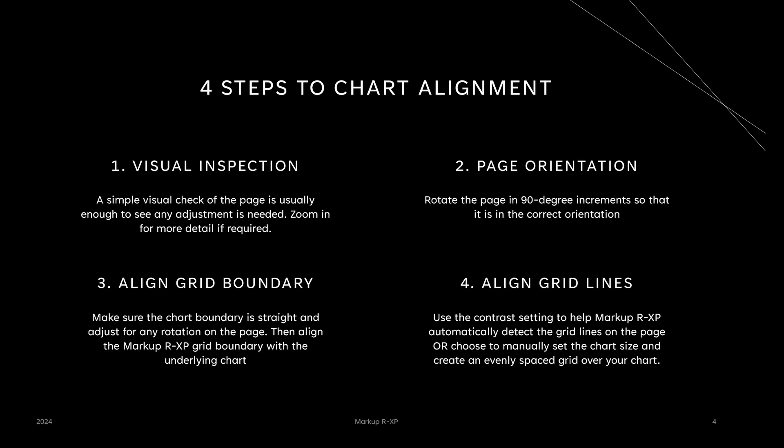These are the four steps I usually follow to align my charts on a single page in Markup RXP. Step number one is a visual inspection, and this is really just to identify any obvious errors with the chart - are the grid lines straight or are they bendy? If I've got bendy grid lines I know I'm not going to be able to get things straight, and this can save you a lot of time once you're aware of what to look for.